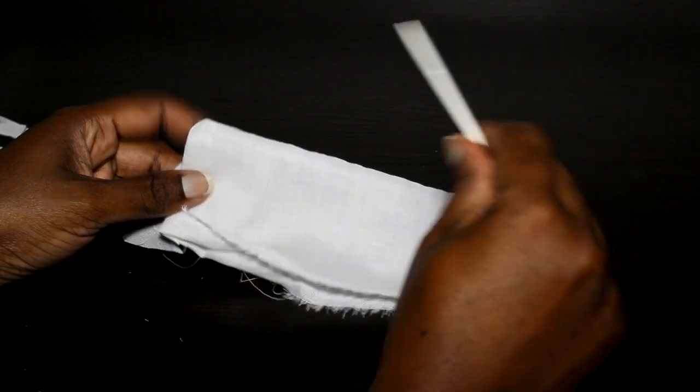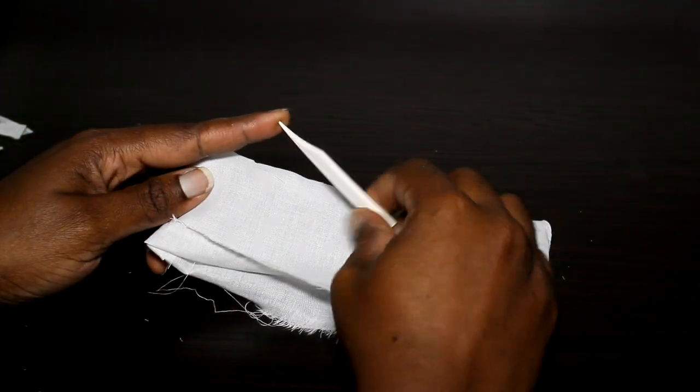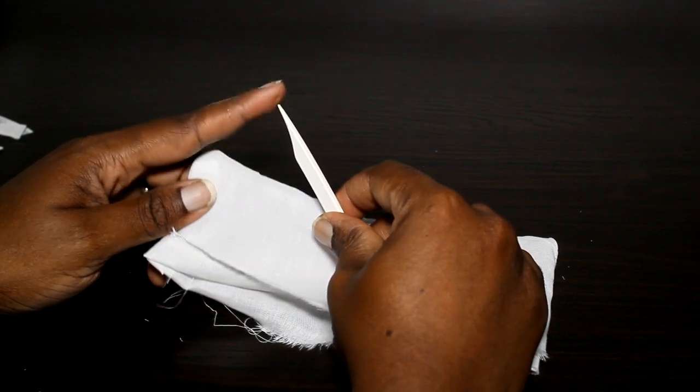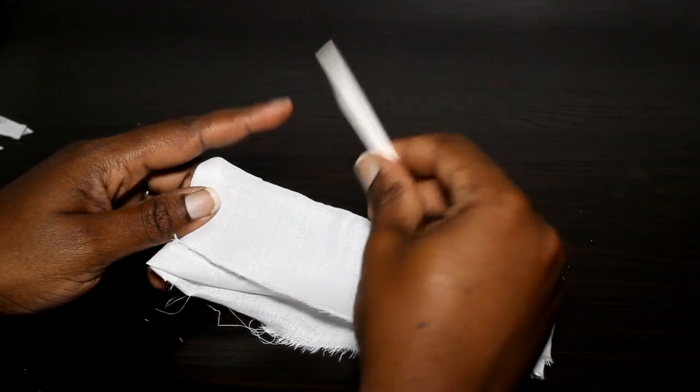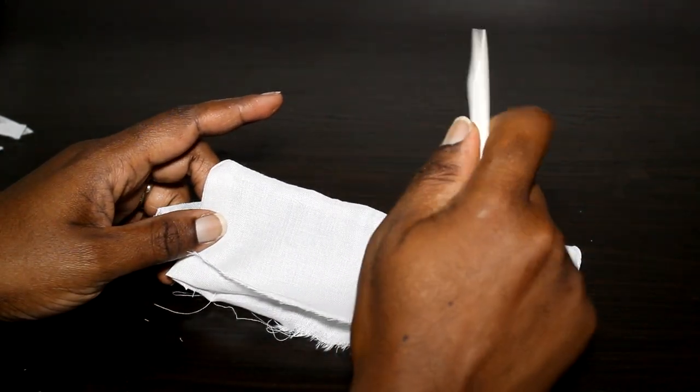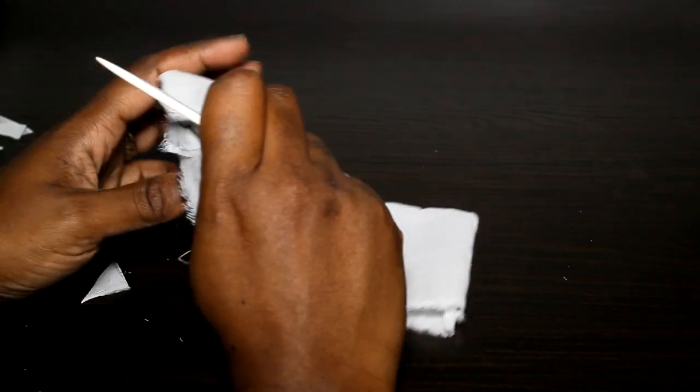Now we're going to try and poke the corners out. You use something pointed but not too sharp. It could be anything, even a pencil, but something that is pointed but not very sharp. You don't want something that's going to tear through your fabric. So don't use your scissors to do this.